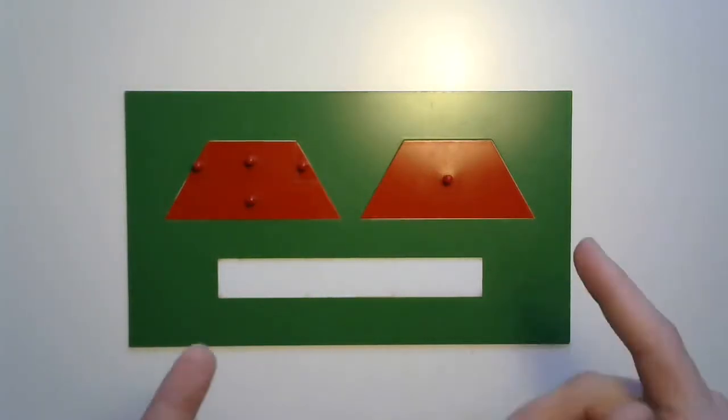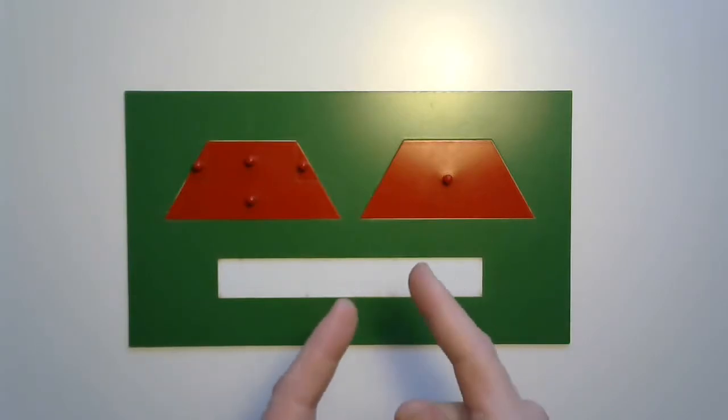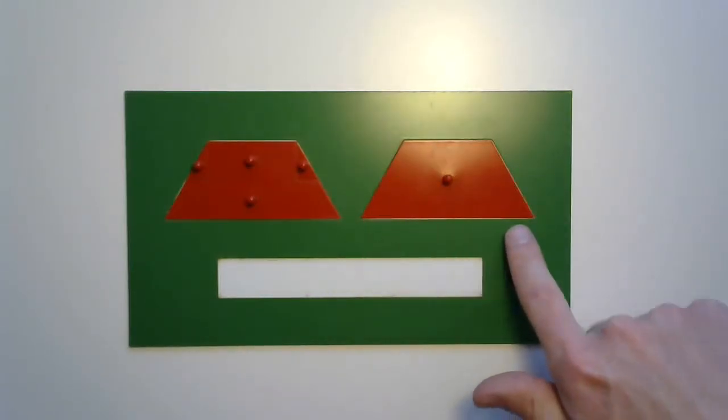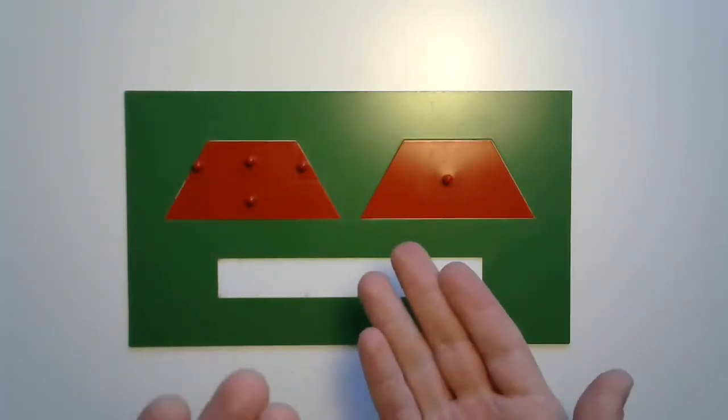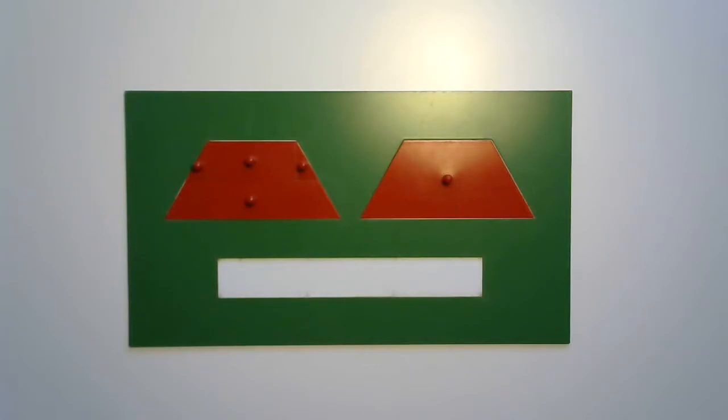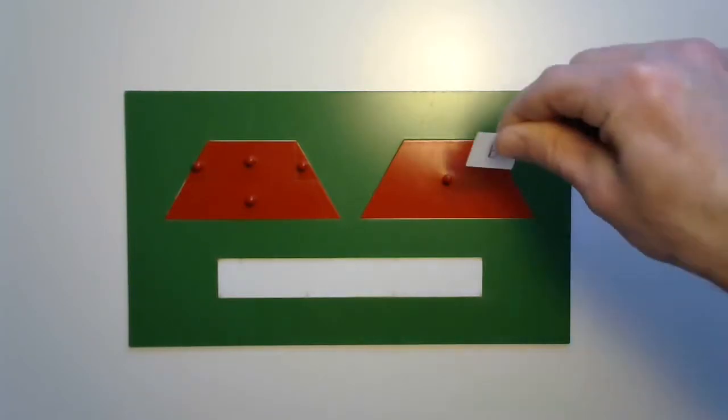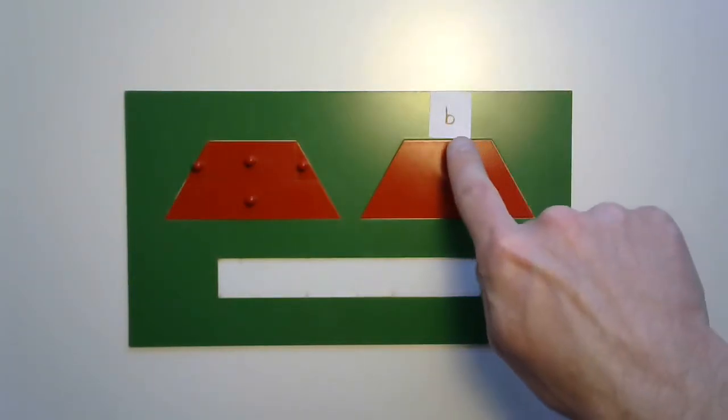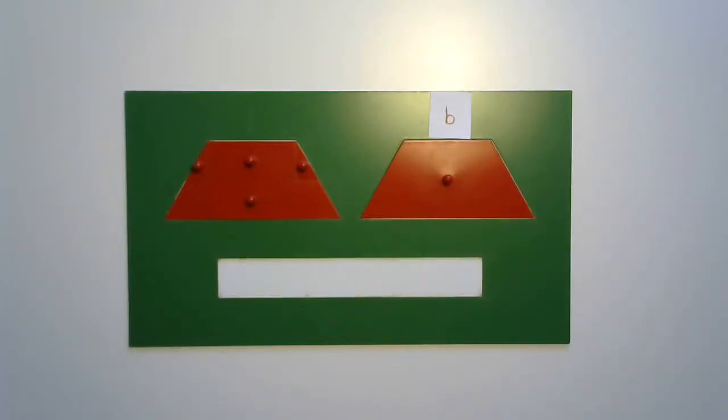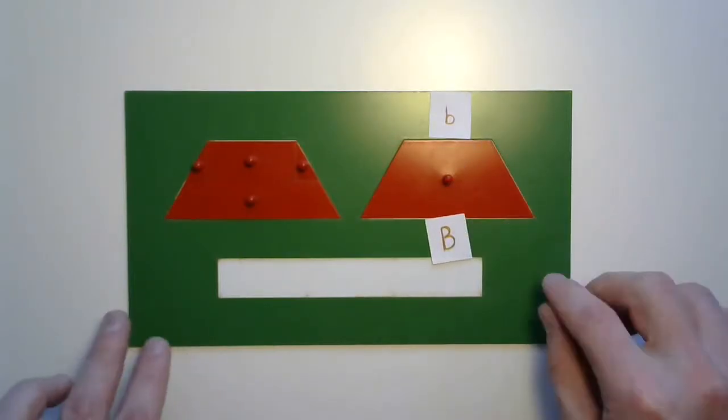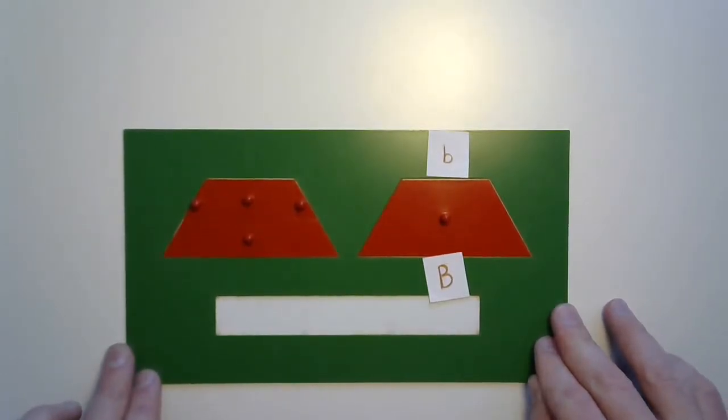For example, trapezoids have two bases, don't they? And what is that difference? One's pretty big, and one's a bit smaller. And remember, we have two names for those bases. There is the minor base, which we'll use a lowercase b for, and the major base, which we'll use a capital B for. It's pretty nice.